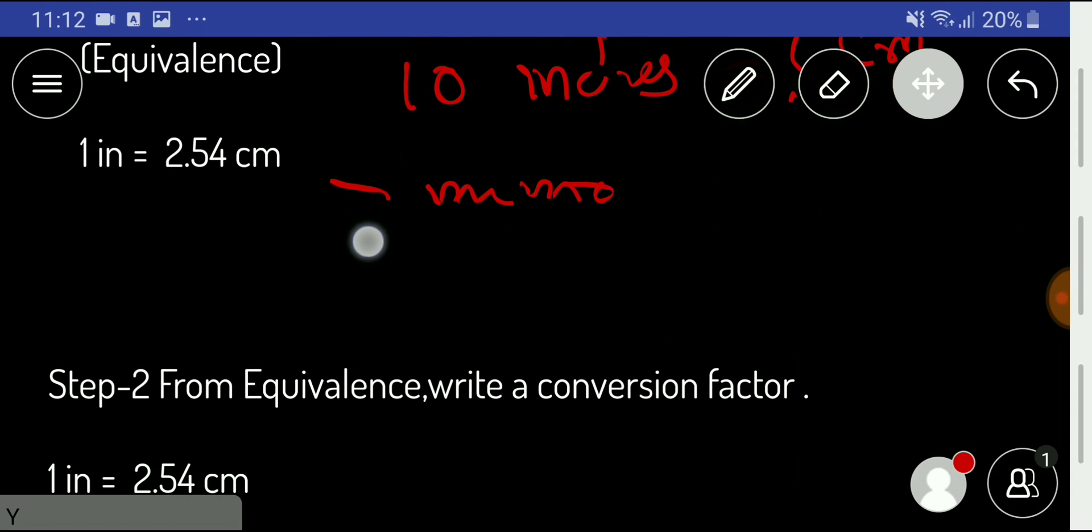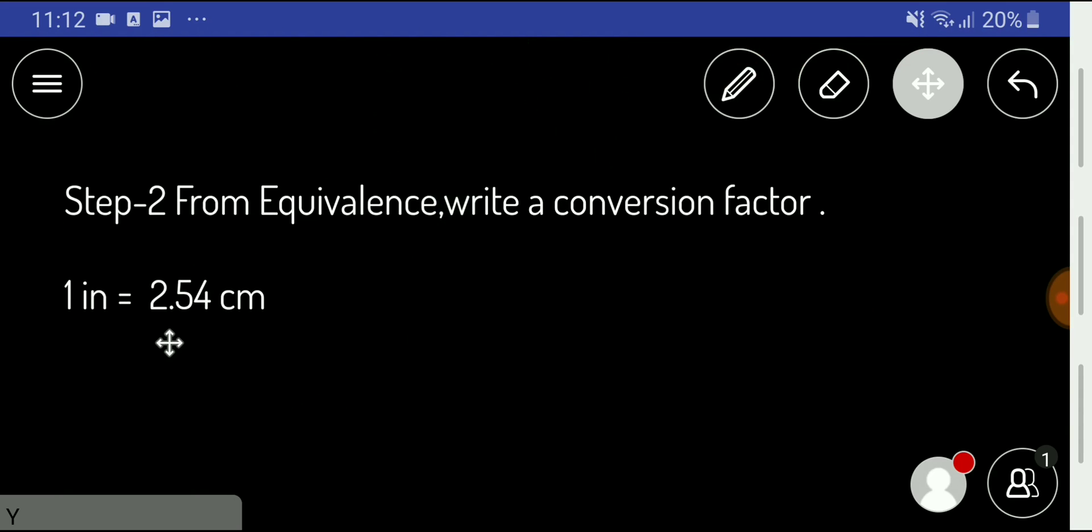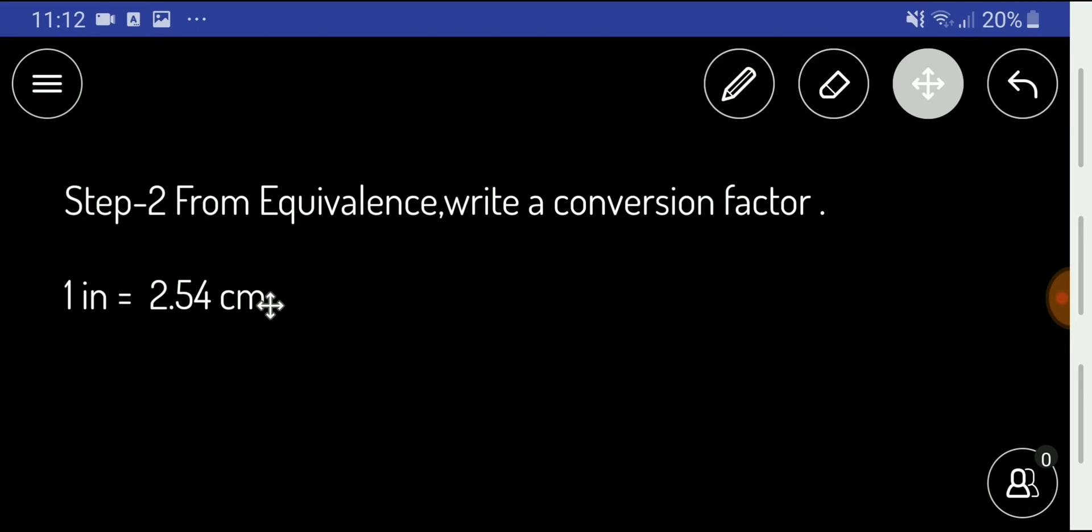What will we do in the second step? We will write a conversion factor from the equivalence. We know this is the equivalence, and now we can write two conversion factors from this.